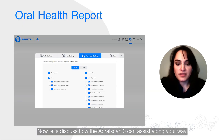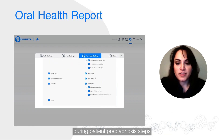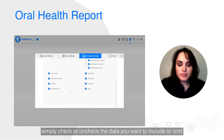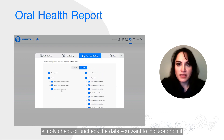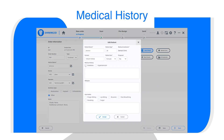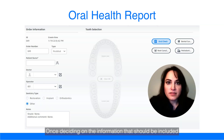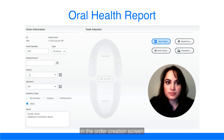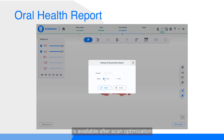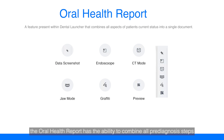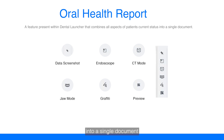Now let's discuss how the AeroScan3 can assist along your way during patient pre-diagnosis steps. The oral health report within the dental launcher software can be customized in the settings tab of the software. Simply check or uncheck the data you want to include or omit from the oral health report. Prior to starting the scan, you can fill in the medical history information of the patient, which can be entered within the order creation screen. Once deciding on the information that should be included in the oral health report, access the feature by selecting oral health check in the order creation screen. Alternatively, the oral health report is available after scan optimization. The oral health report has the ability to combine all pre-diagnosis steps into a single document by selecting the icons based on the information you want to highlight and customize for your patient.